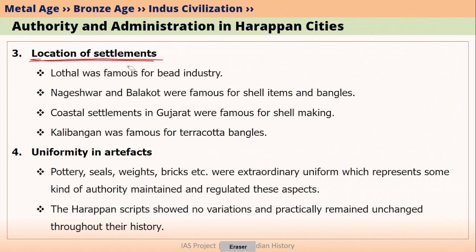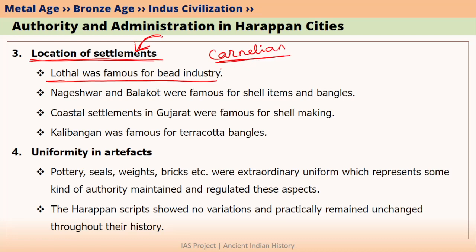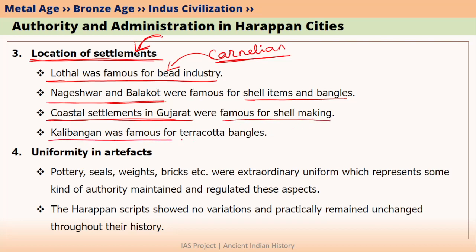The third element is the location of settlements. Harappans tried to settle at places where required raw materials were available. For example, Lothal is famous for its bead industry because it is located close to sources of carnelian — a brownish-red stone used in making stone beads. Similarly, Nageshwar and Balakot are coastal sites of the Indus Civilisation that made shell items and bangles. Other coastal settlements in Gujarat were also famous for shell-making. Kali Bangan had resources to make bangles, so they made terracotta bangles. The choice of settlements was carefully selected by some kind of authority or administration.